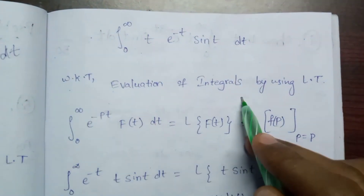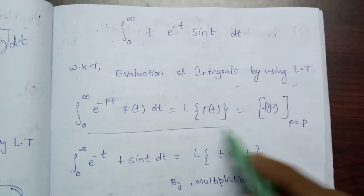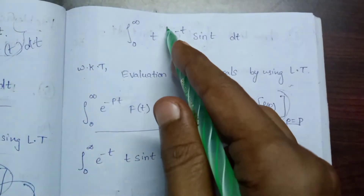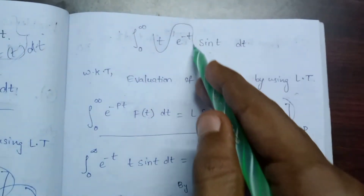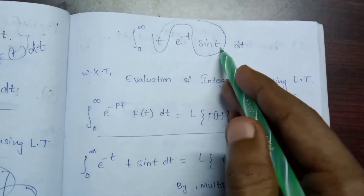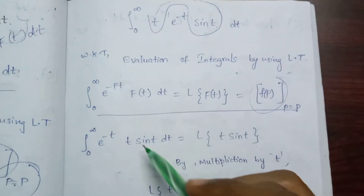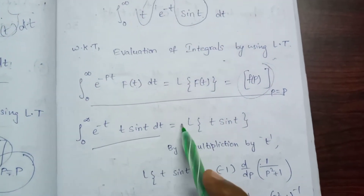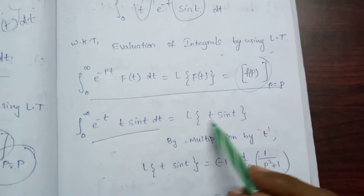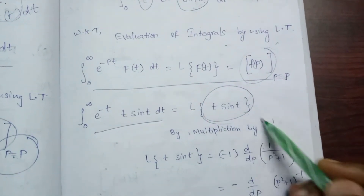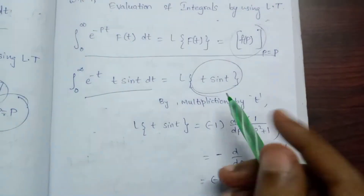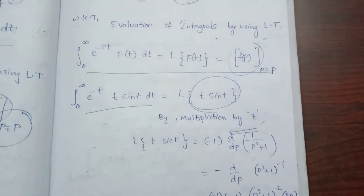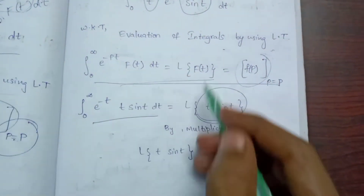We know that evaluation of integrals by using the Laplace transform. We are using the formula. Here we have f of p. The Laplace transform of f of t is t sin(t). We use multiplication by t — this is the Laplace formula.